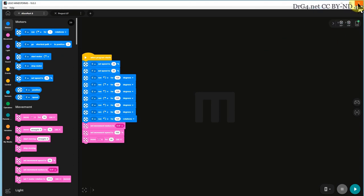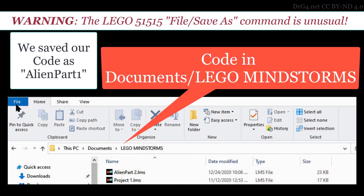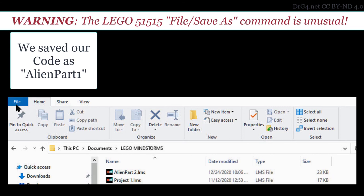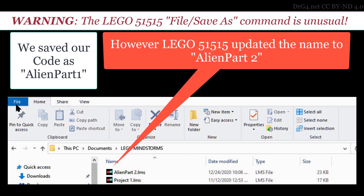Now, if we close things down and start up again, we find something unusual. We saved as alien part one. However, Lego has edited our name and it's become alien space two. So Lego has updated the number. Now this is a bit of a trap. It's very unusual. So be aware of this. And so to open our alien part one, we in fact have to open alien part space two dot lms.